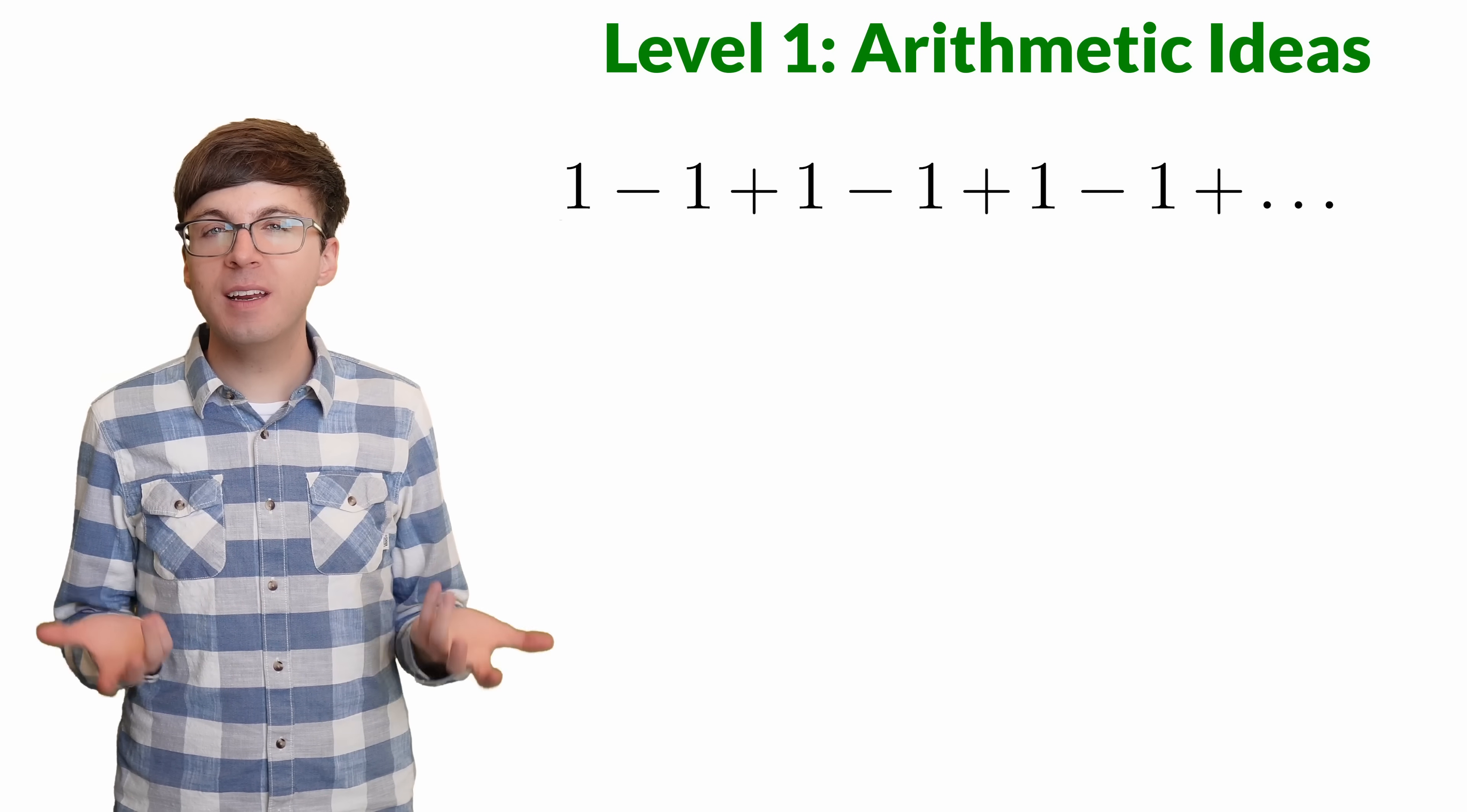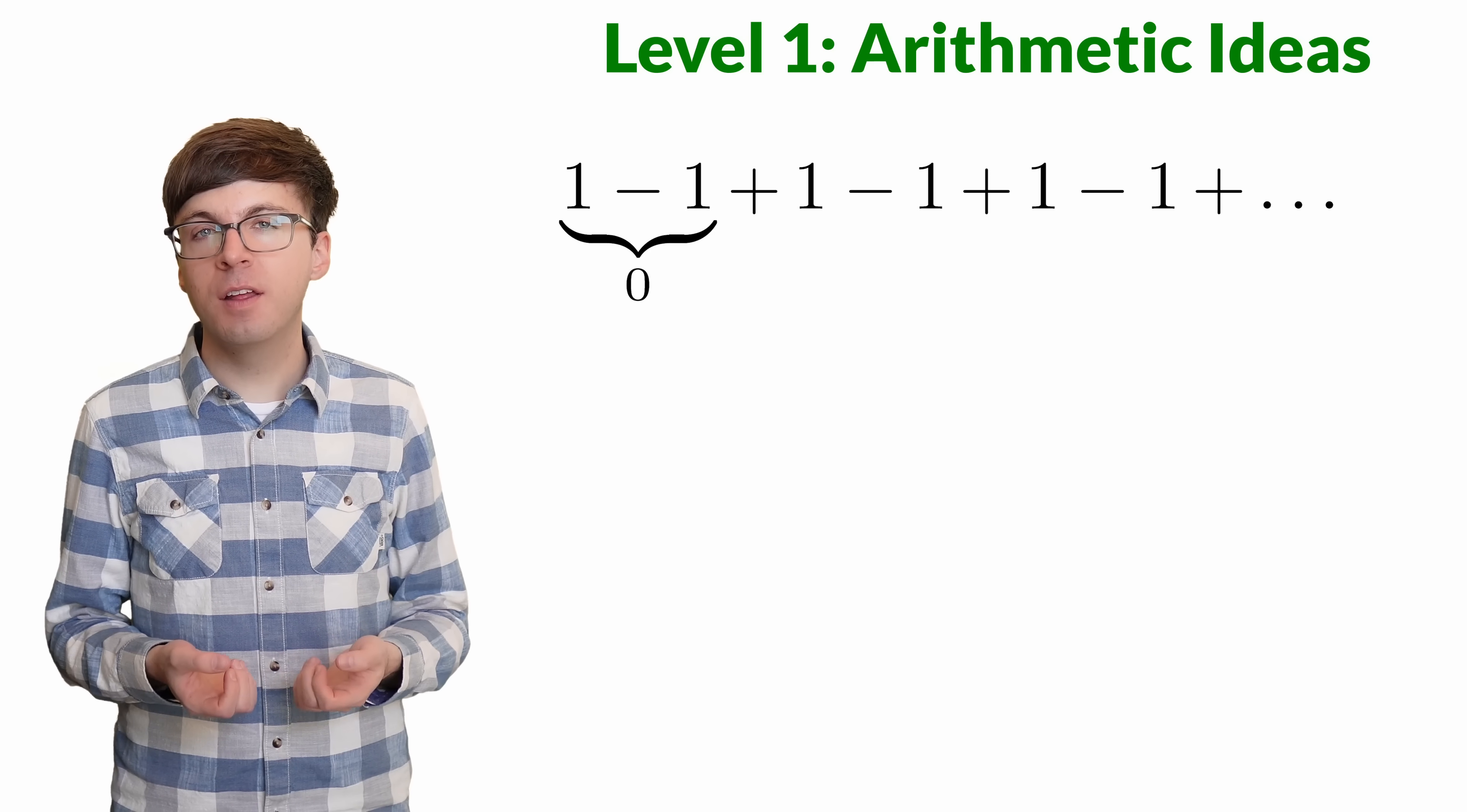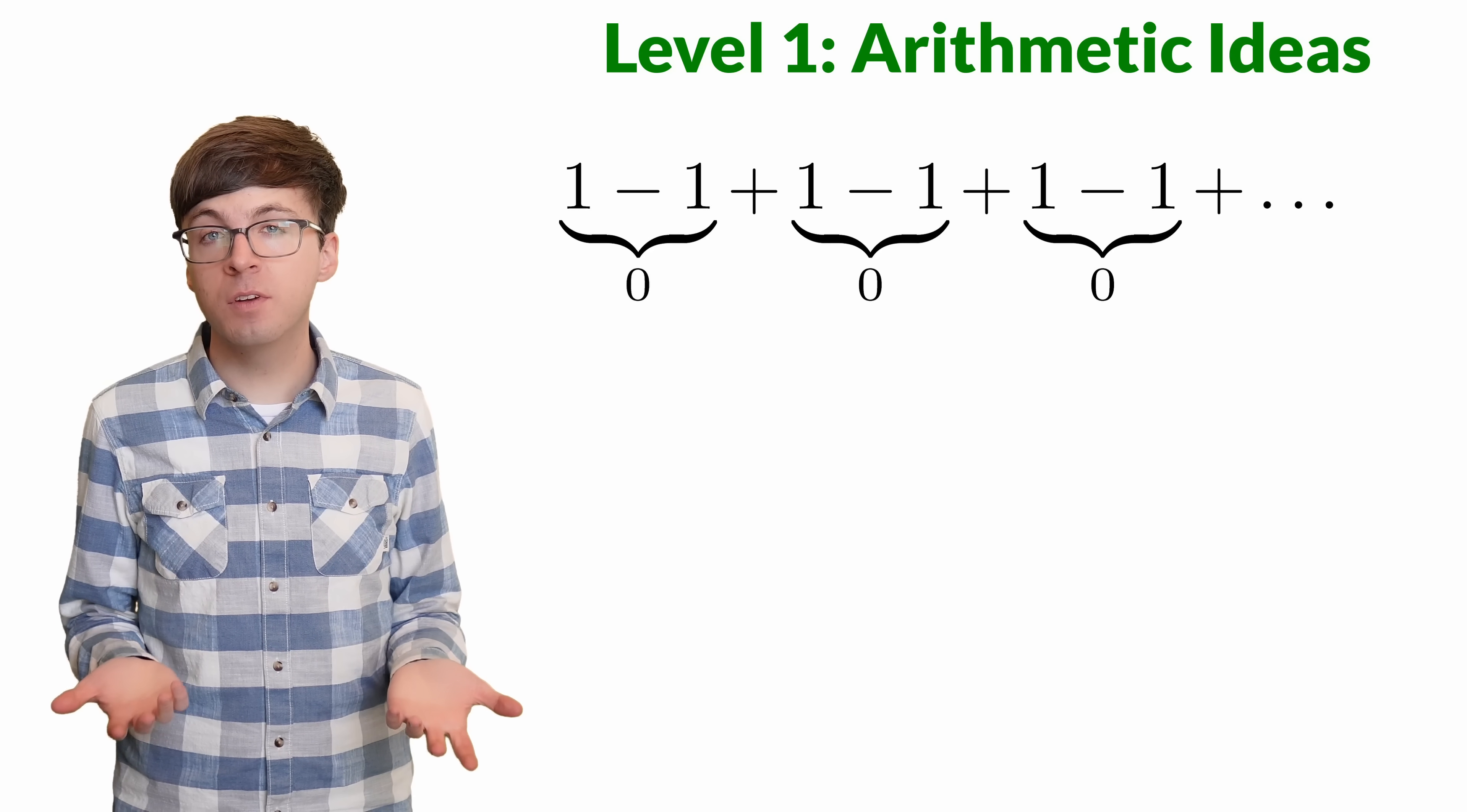For the first level, we might try to cancel out some of these values. The first two numbers are plus 1 and minus 1, which cancel out to 0. Then the next pair also cancels out to give 0, and so on. So it seems like this sum should equal 0.